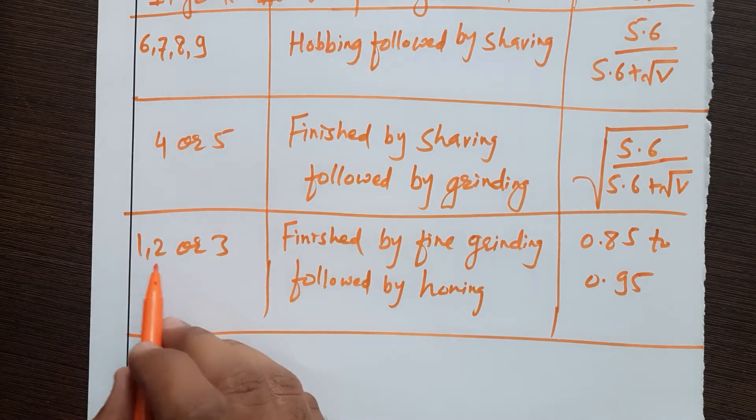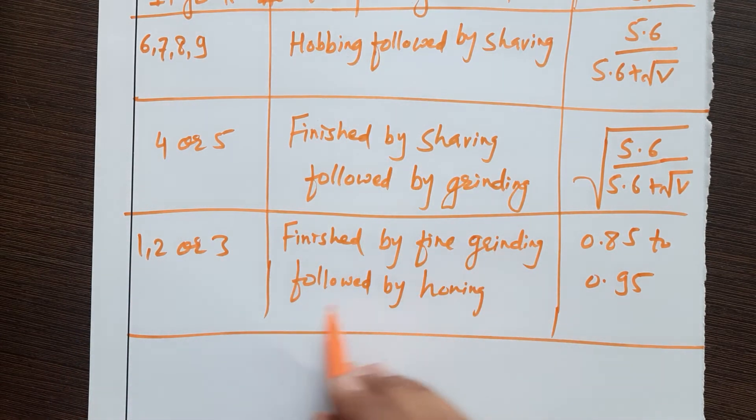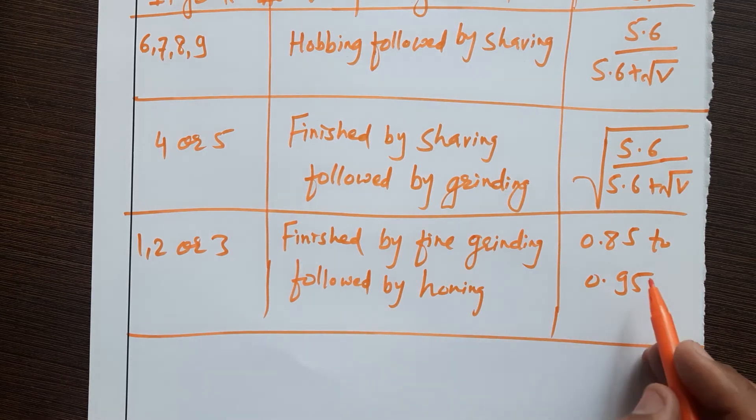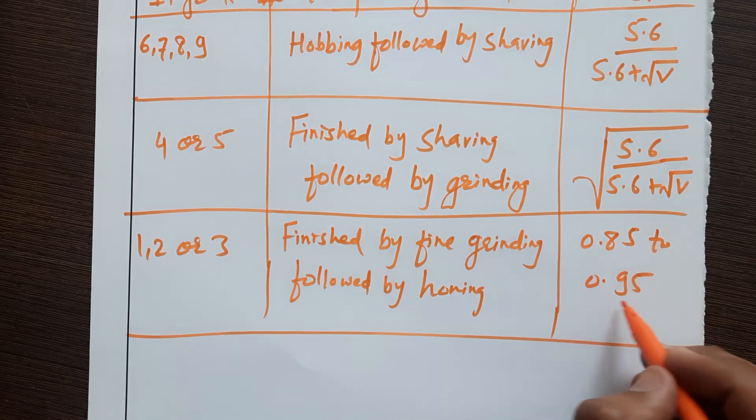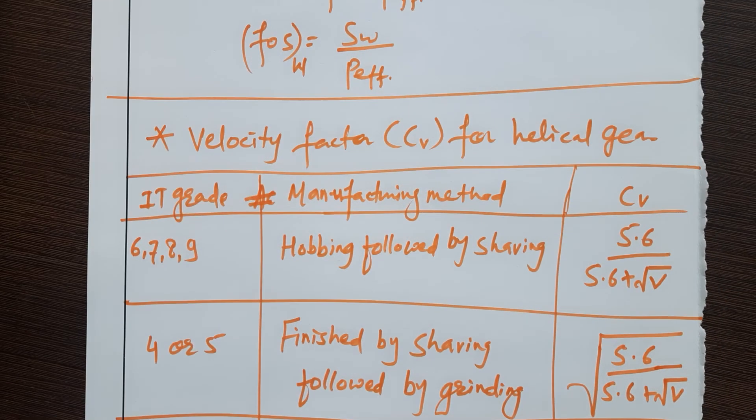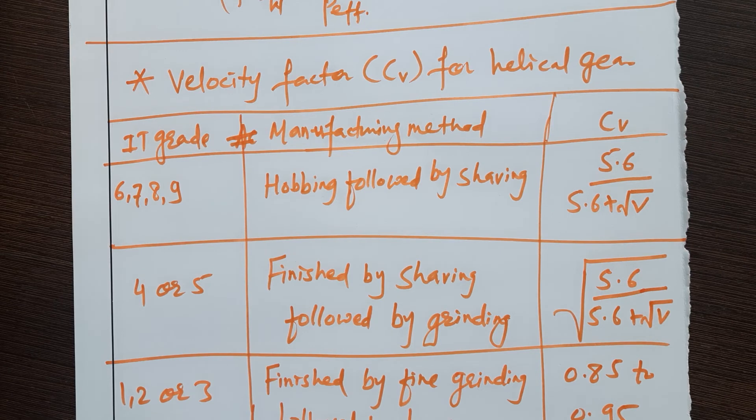If you are having IT grade 1, 2, or 3, or the manufacturing method finished by fine grinding followed by honing, in that case your CV will be 0.85 to 0.95. In this way you have to calculate velocity vector for helical gear.